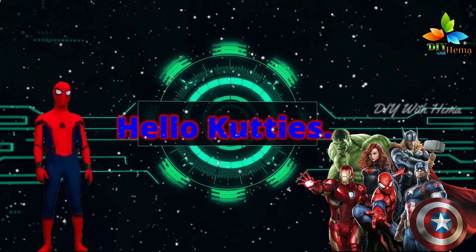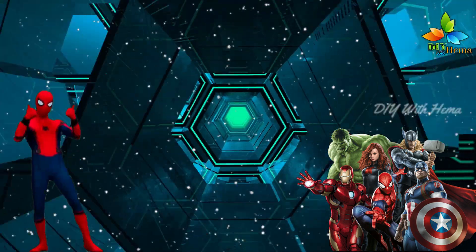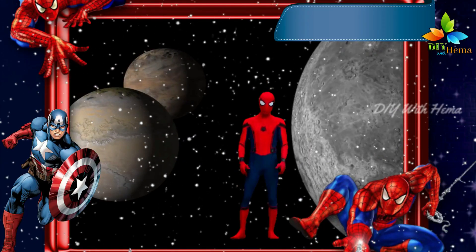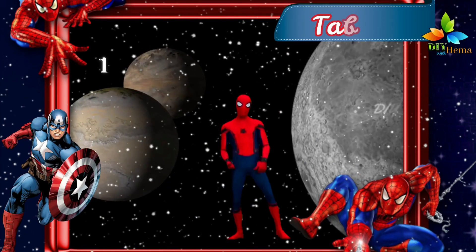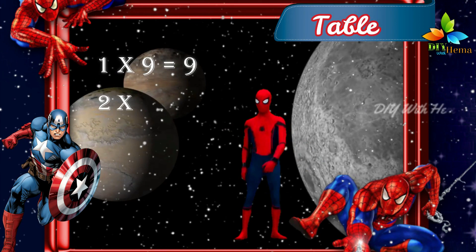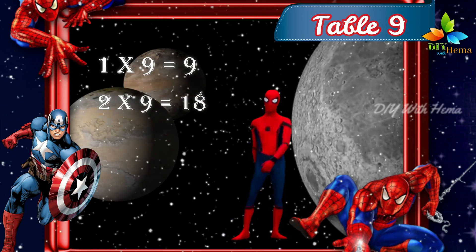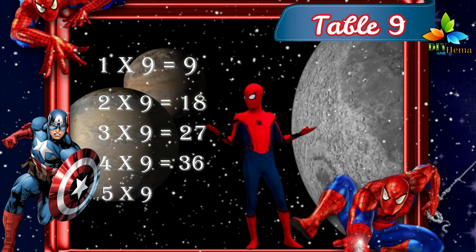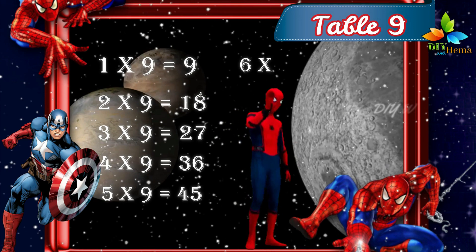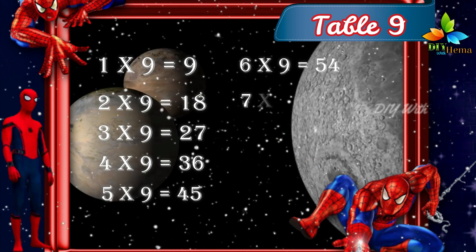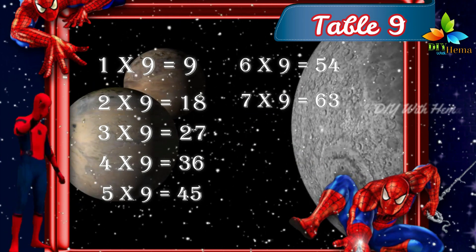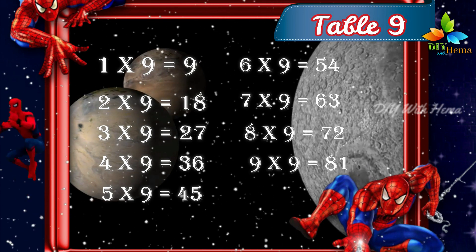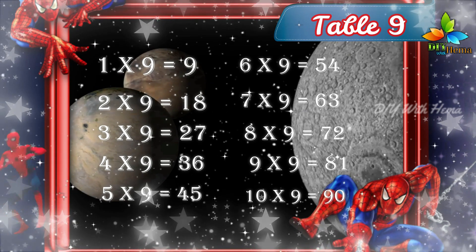Hello goodies! Shall we repeat? Come on, let us say! One, nines are nine. Two, nines are eighteen. Three, nines are twenty-seven. Four, nines are thirty-six. Five, nines are forty-five. Six, nines are fifty-four. Seven, nines are sixty-three. Eight, nines are seventy-two. Nine, nines are eighty-one. Ten, nines are ninety.